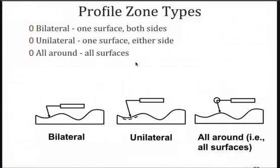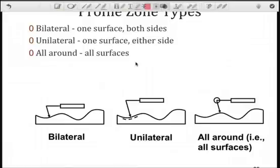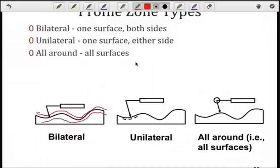There's a slight variation in constructing the tolerance zone. And it has to do with whether we have a bilateral, unilateral, or all-around surfaces. The default is a bilateral. In other words, we're going to create our offset surfaces or cross-sections on both sides of the surface. That would be the bilateral by default.